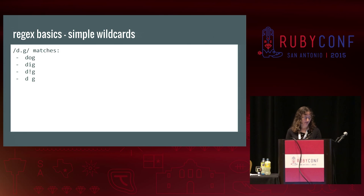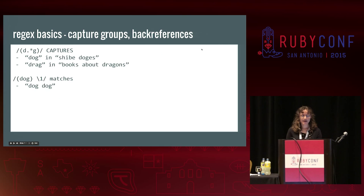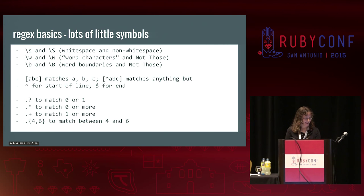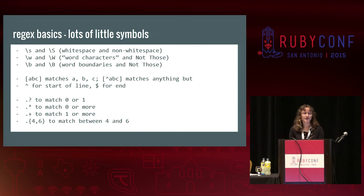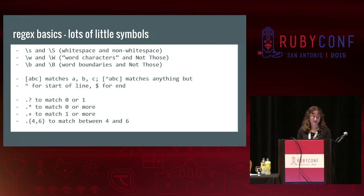There are a lot of other little wildcards that can match more specific things as well — word characters, whitespace, even a thing called a word boundary, which is the first or last character of any given word. Both characters and wildcards can be grouped if the default groupings aren't powerful enough, and you can specify the number of characters to be matched with other wildcards like star and plus.